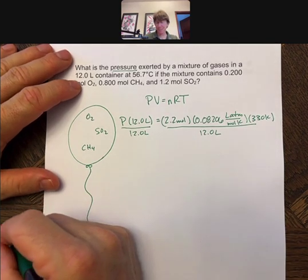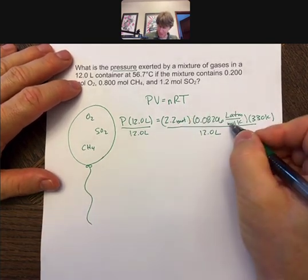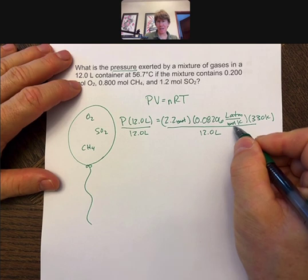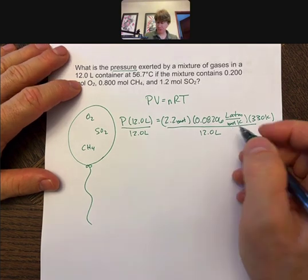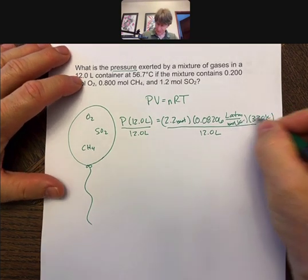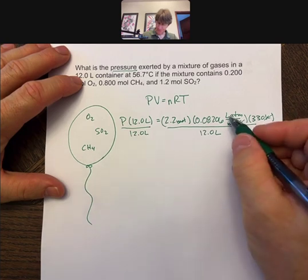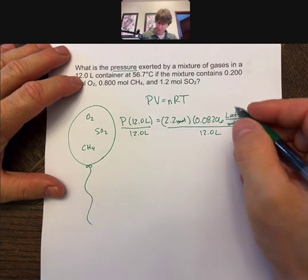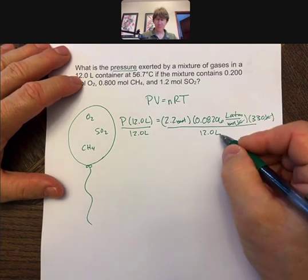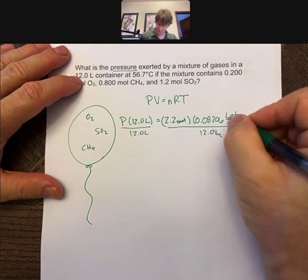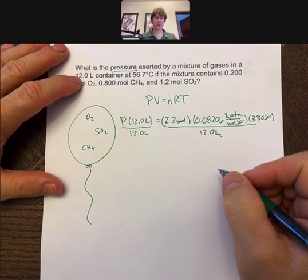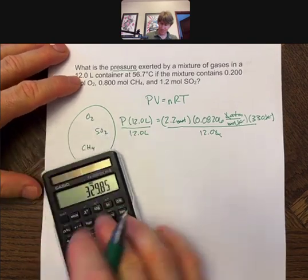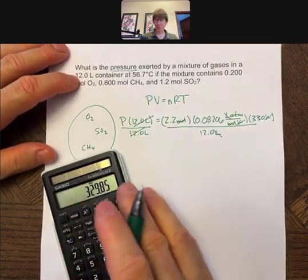If I wanted to see how my units cancel out, I've got moles in the numerator and moles in the denominator of the numerator. I've got the same thing for Kelvin, and I've got liters in the numerator, and then this is equivalent to the denominator as well. So my final units will be atmospheres, and my 12 liters cancel over there.